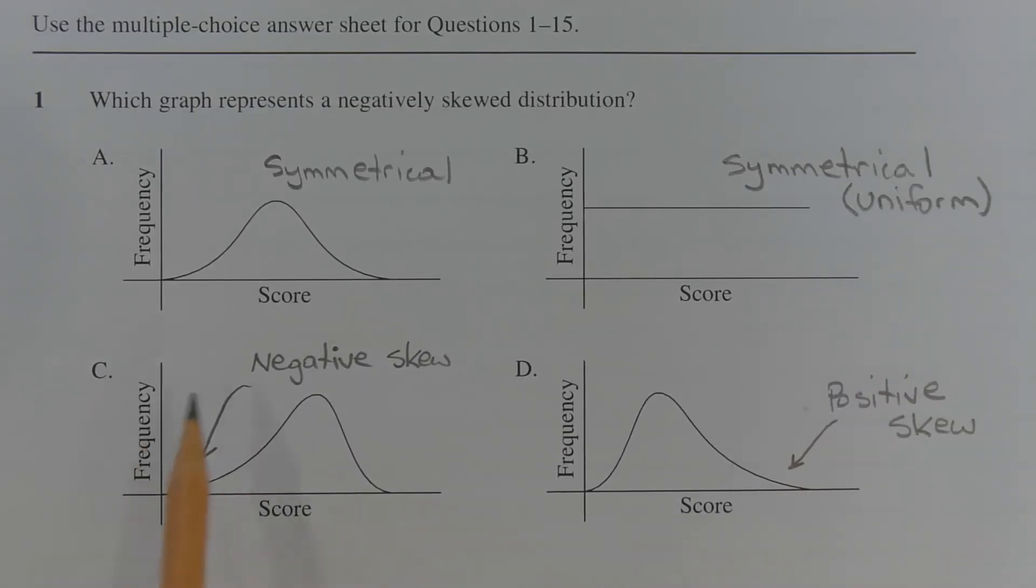Option C describes a negatively skewed distribution because the left hand tail is longer than the right hand tail.